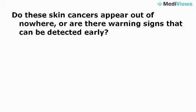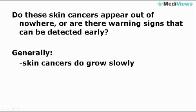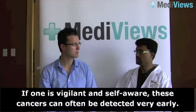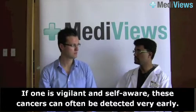Do these skin cancers just pop up out of nowhere, or are there warning signs beforehand? One advantage we have in dealing with skin cancers is they generally grow slowly. You might see a small lesion at first that's gradually growing, and then bleeding or crusting. They do start out as a small spot, generally speaking, and then continue to get bigger. So looking out for those features of an unusual spot on the body is always a good idea.